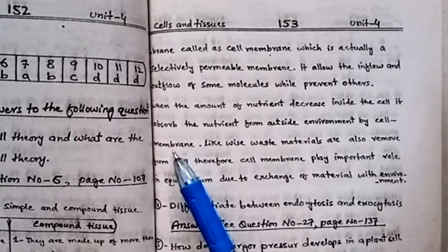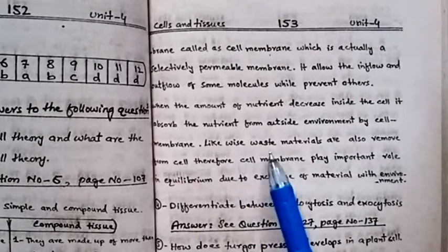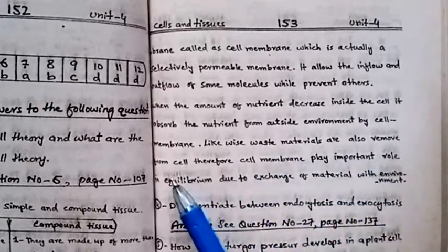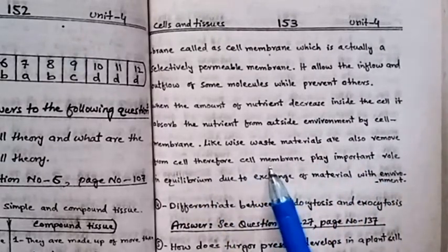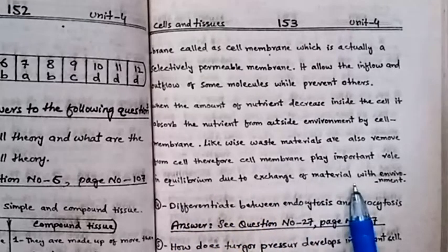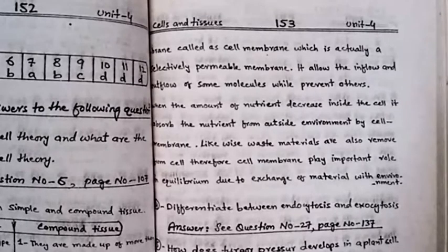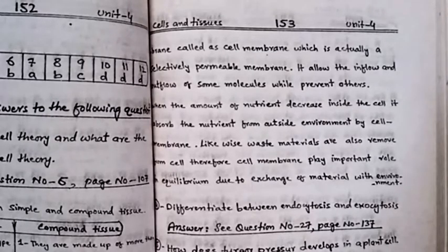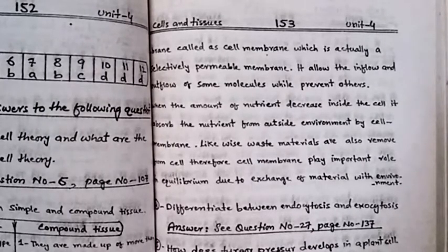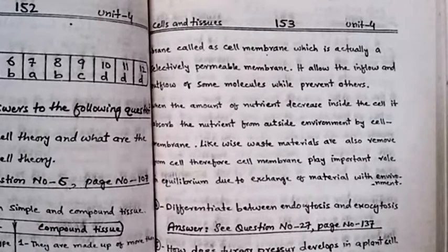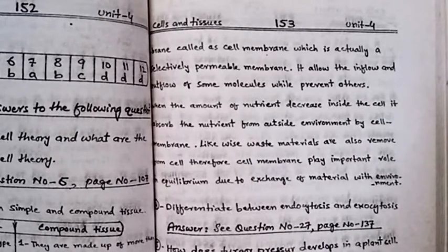Similarly, the waste material is removed from the cell. Therefore, cell membrane plays an important role in equilibrium due to the exchange of material with the environment. If nutrients decrease, they will be absorbed through cell membrane.